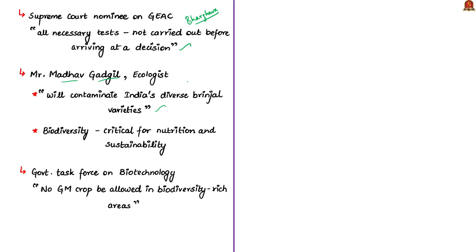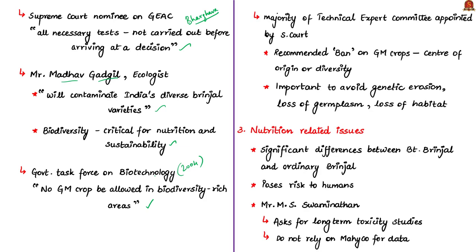Because if one variety of brinjal has been modified as a GM crop, farmers will keep on using that variety to yield more benefits and reduce crop losses. In the long run, there will not be any other variety available in India other than BT Brinjal. Biodiversity is very much critical for nutrition and sustainability. Even the government's own task force on biotechnology in 2004 had recommended that no GM crop be allowed in biodiversity-rich areas of India. Further, a majority of the technical expert committee appointed by the Supreme Court recommended a ban on genetically modifying crops for which India is a centre of origin or diversity — and India is a centre of origin for the majority of brinjal varieties.